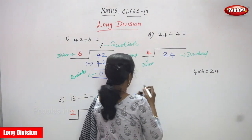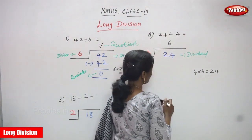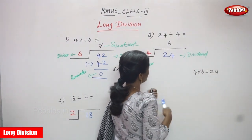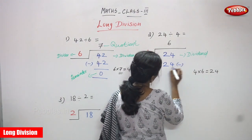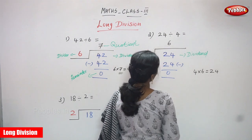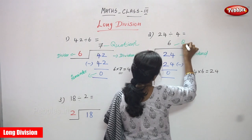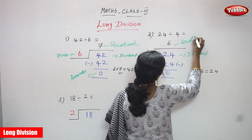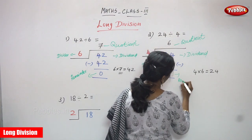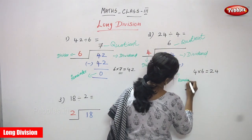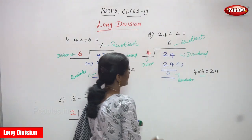So you must write the quotient 6 on the top. 4 6s are 24, so you must write 24. Then 24 minus 24 you can get 0. So 6 is the quotient and 0 is the remainder.